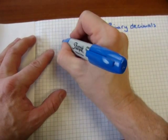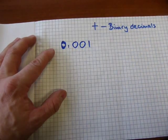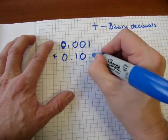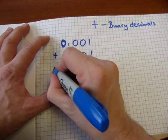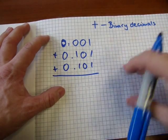How about 0.001 plus 0.101, how about that one. Let's add those three numbers.